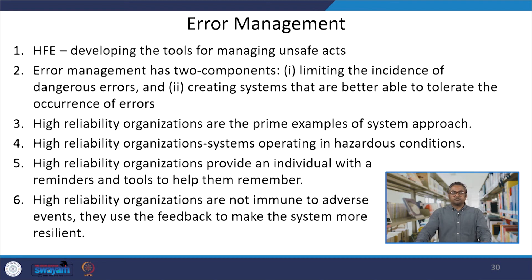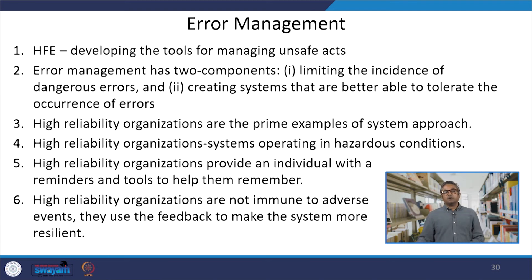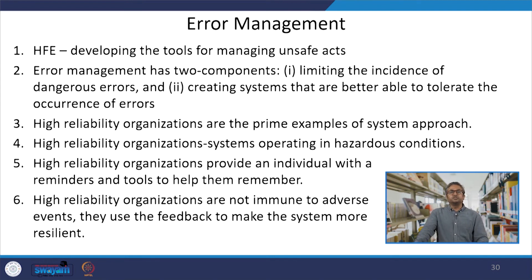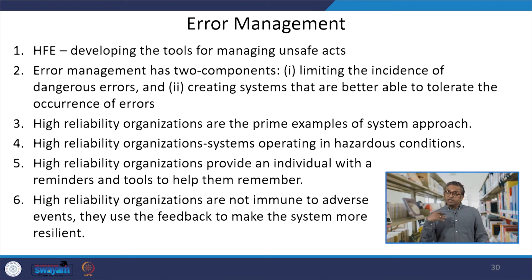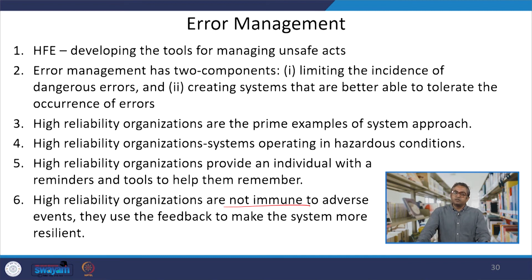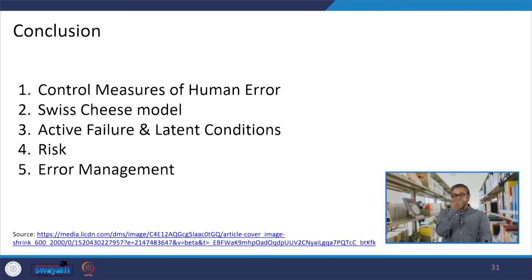There are case studies where, a few years back, a pilot crashed a plane in the Scandinavian mountains, taking the lives of 120 passengers. The pilot was suffering from mental health issues and the organization's counselors were not able to detect that the person was suffering from depression. High reliability organizations must ensure that their employees are in a very good mental, physical, and cognitive condition so that such human errors can be avoided. However, high reliability organizations are not immune to adverse events — even after making the system robust, it does not mean they are foolproof. They use feedback mechanisms to make the system more resilient and robust.